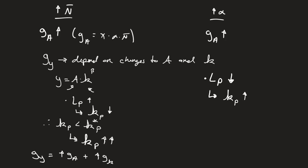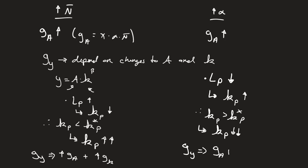If 10% of our factory workers go back to school, we now have more sewing machines per person still working. That means K sub P is going to be greater than K star sub P. Since it's above the steady state, K sub P is going to start falling back towards it. So the growth rate of Y is pushed up by the growth rate of A, but pushed down by the growth rate of capital — meaning it takes longer to reach its new steady state.